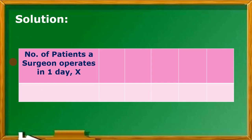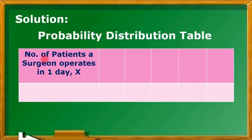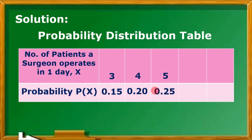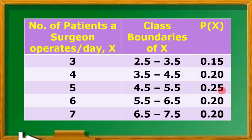So we construct now the probability distribution table. In one row we have the number of patients a surgeon operates in one day, called x. In another row, we have probability P(x). For 3 patients, P(3) = 0.15; P(4) = 0.20; P(5) = 0.25; P(6) = 0.20; and P(7) = 0.20.